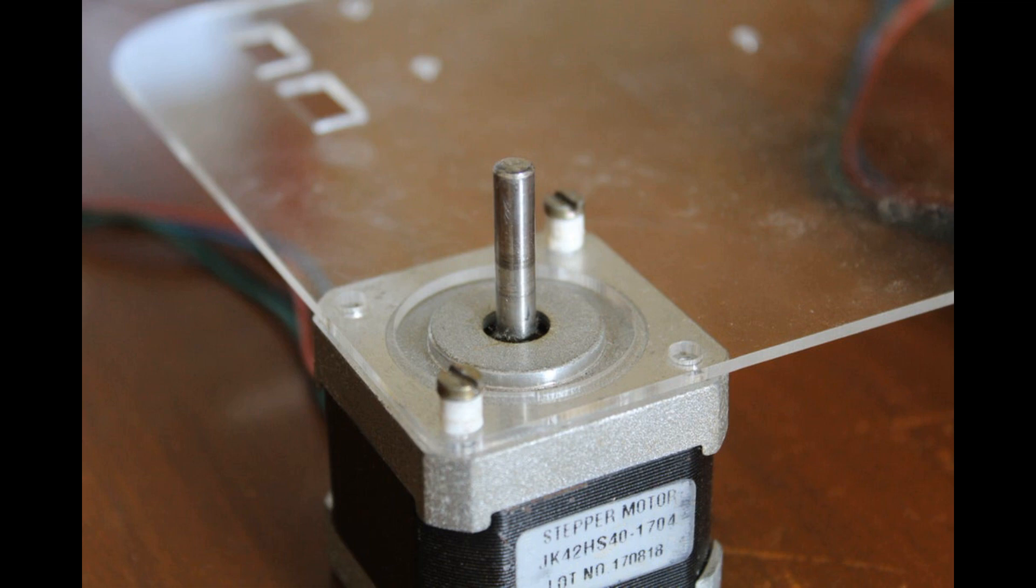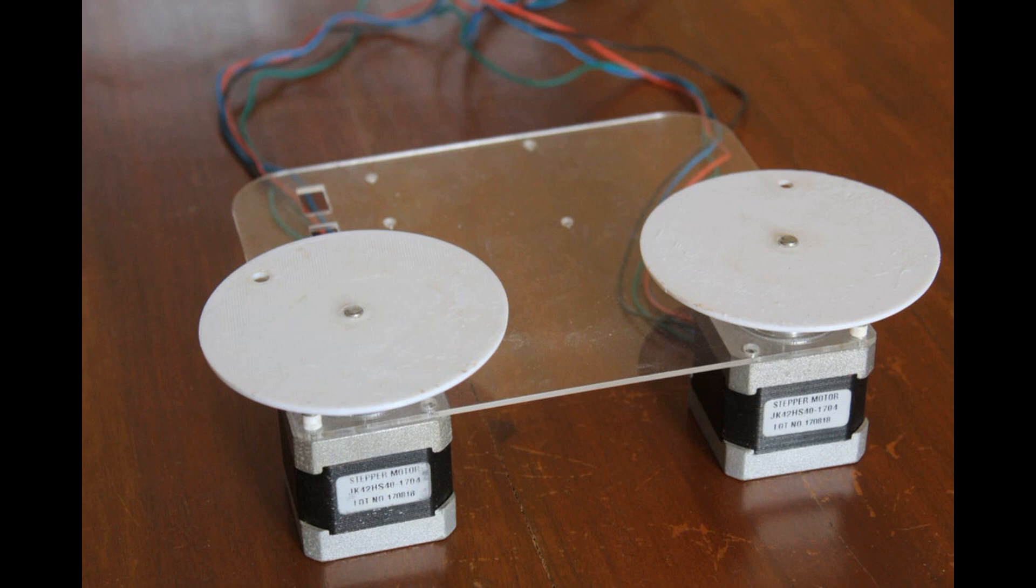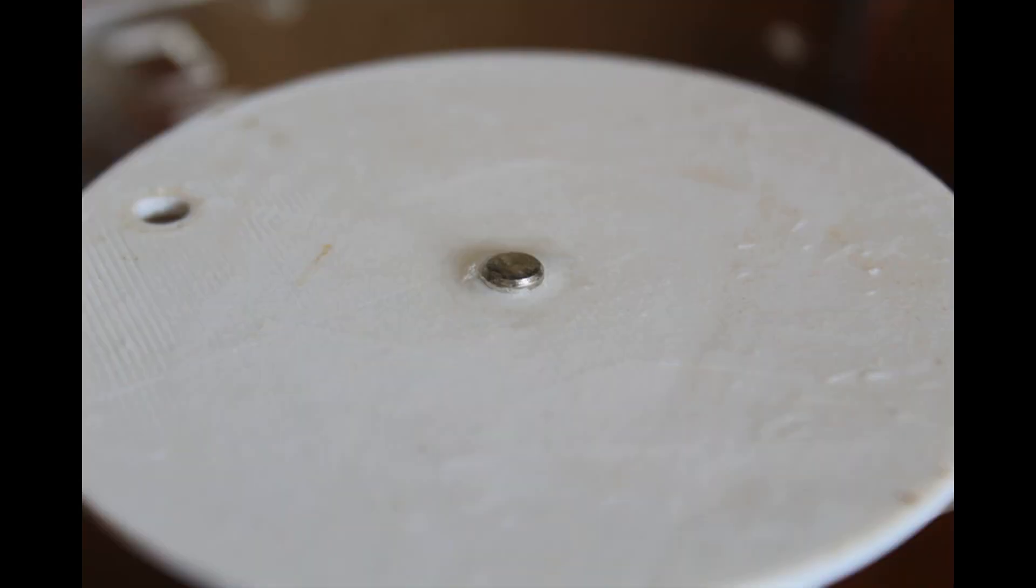If the piece is too loose, use a drop of super glue to attach the circular piece to the stepper shaft. Once the stepper motors are mounted to the panel and the circular pieces are attached to the shafts of both motors, pass a bolt through the hole on the circular piece and secure it with a nut. Repeat this for both motors.